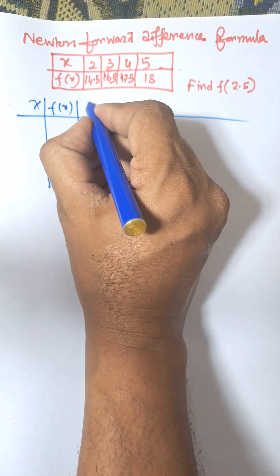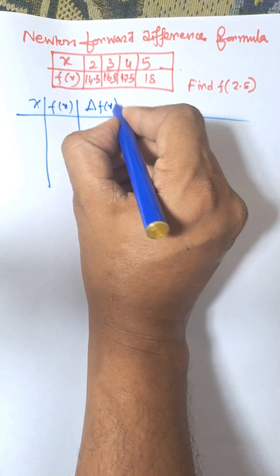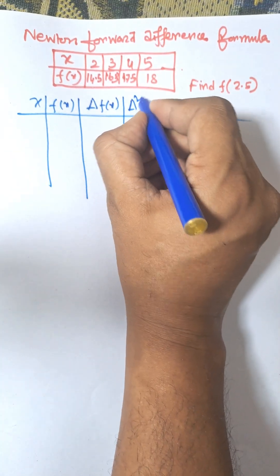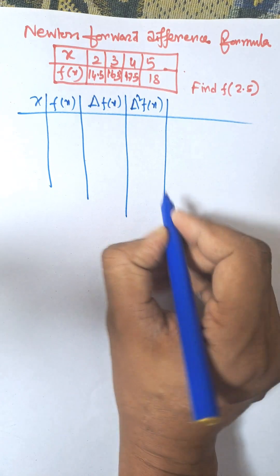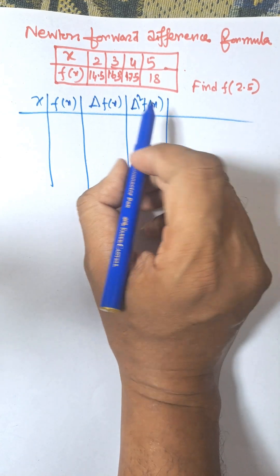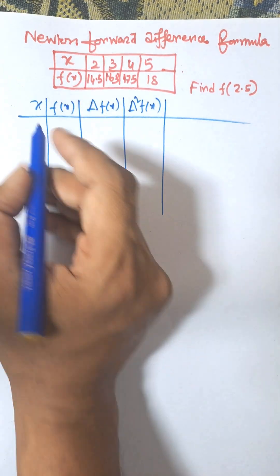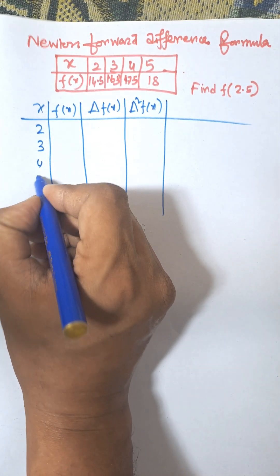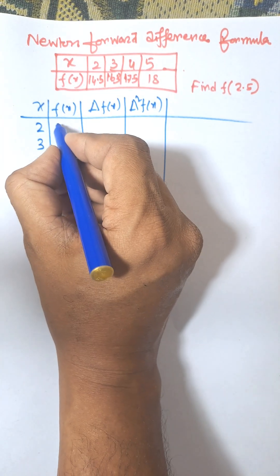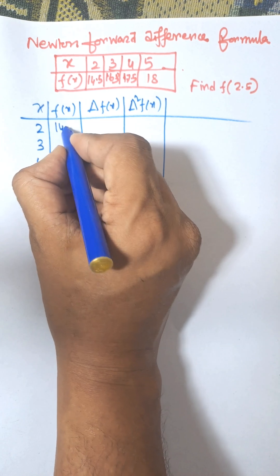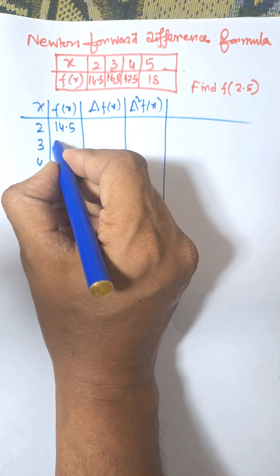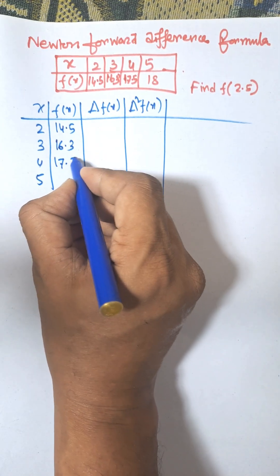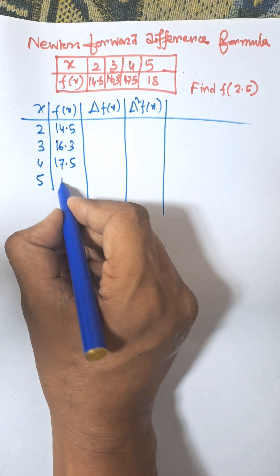Then del of f(x), meaning first order difference, then del square of f(x), and so on until we get a single value. The x values are 2, 3, 4, 5, and the corresponding f(x) values are 14.5, 16.3, 17.5, and 18.